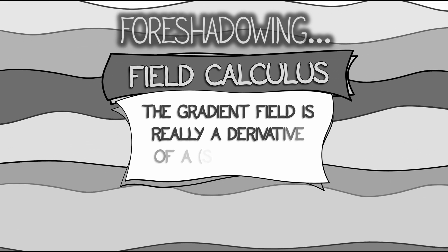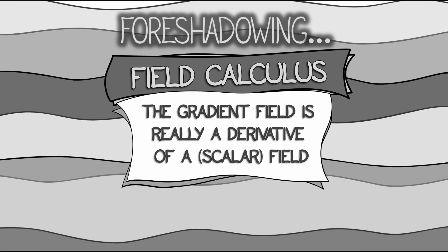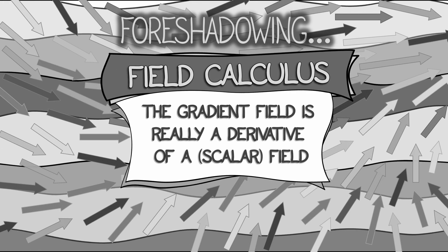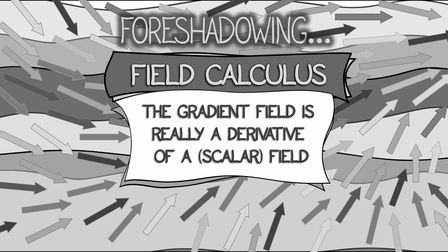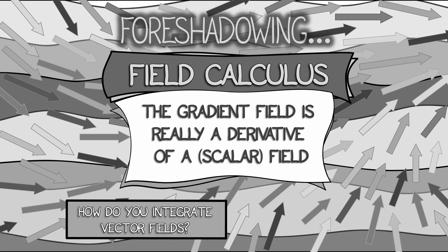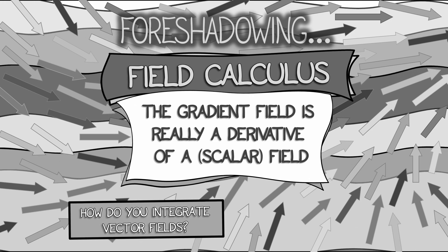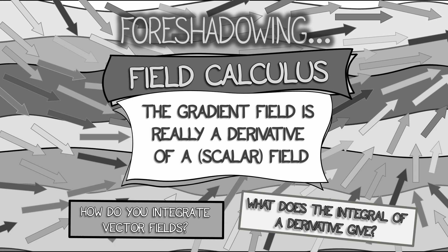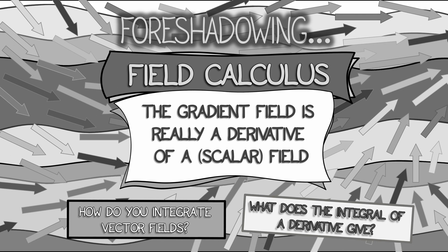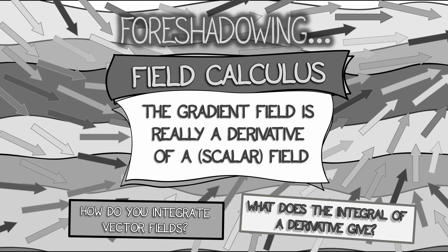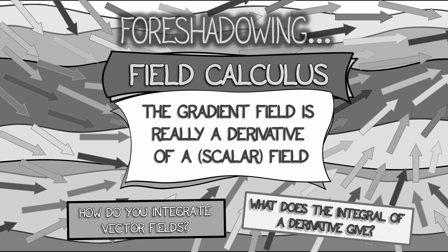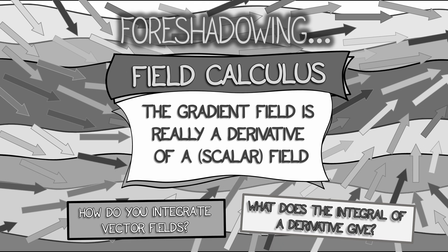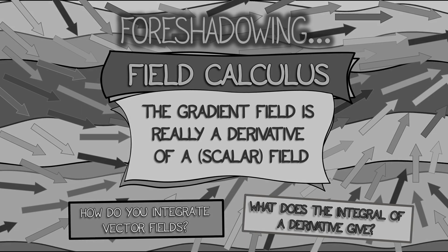Because the gradient is really a vector field, and this is really the derivative of a scalar field. How do you integrate vector fields? What happens when you integrate a derivative? How does this connect to the core truths of calculus? Someday, someday, you will know.